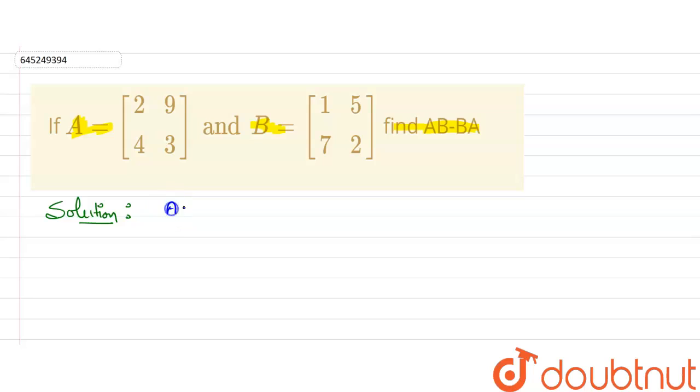So what is AB and what is BA? AB is the multiplication of matrix A with B. So 2, 4, 9, 3, that is matrix A and matrix B is 1, 7, 5, 2. This will give us AB and second one is BA.